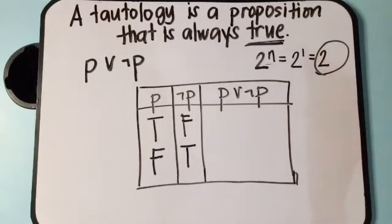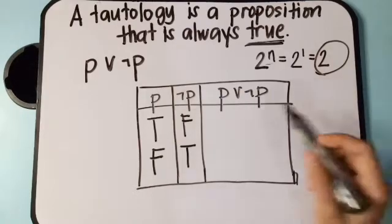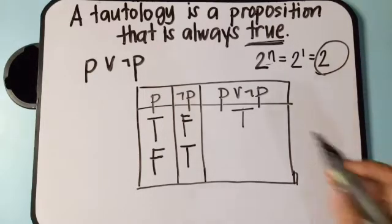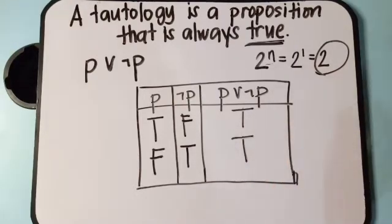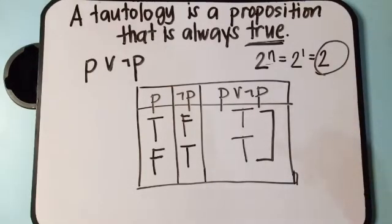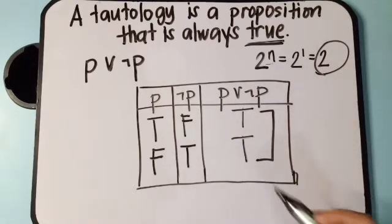Checking the truth table for disjunction: if the first proposition is true and the second is false, the truth value becomes true. As you can see, all the answers are true — lahat ay true. So when the truth values are all true, that is what we call a tautology.